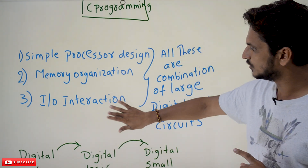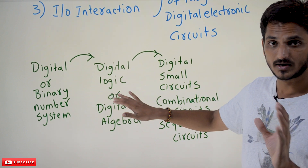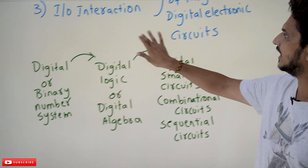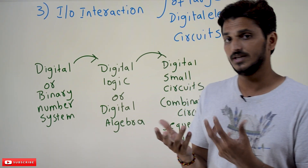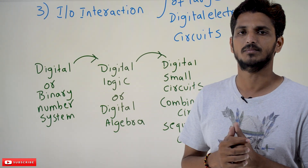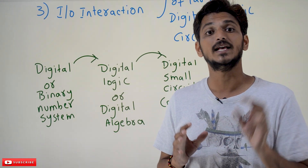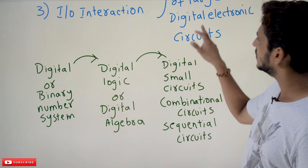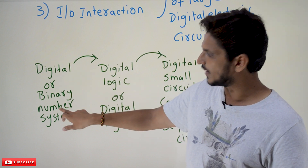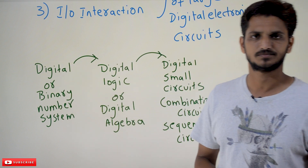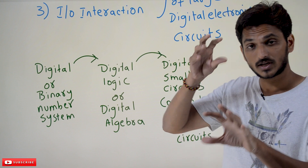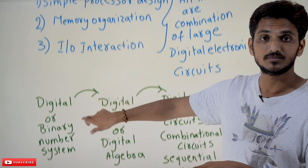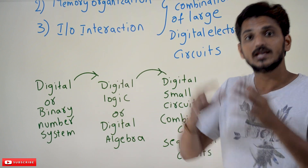Now, coming to today's topic: what level of understanding are you going to get after completion of digital logic design? Up to now we don't have any knowledge about digital — digital means binary number system. We have knowledge about the decimal number system but not the binary number system. That's why this subject, digital logic design, starts with the digital or binary number system. Keep these points in mind — your target is to achieve this understanding, and start studying this subject with that direction in mind.